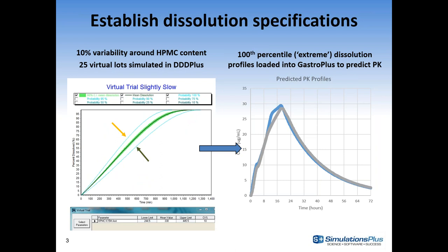Another usage case is establishing dissolution specifications. Many times there's variability in the processing of formulations, and so there can be variability in your dissolution experiment, either caused by content uniformity or production. You may want to see whether or not that variability in dissolution translates to any in vivo bio-inequivalence. You could use the population simulator within GastroPlus to test the upper and lower ranges of the dissolution specifications to see if those are bio-equivalent.